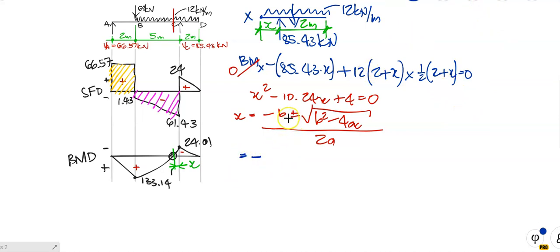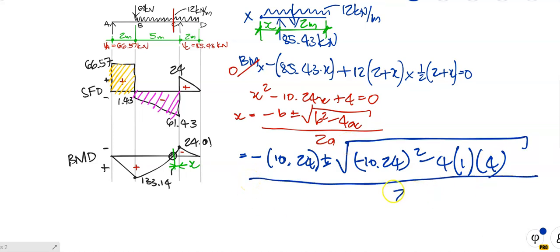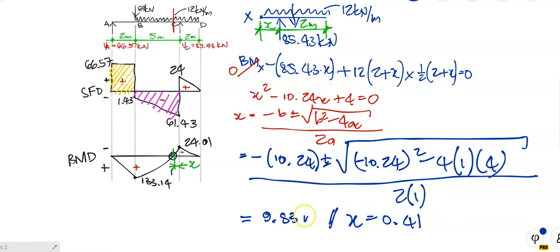X equals minus B — and B is minus 10.24 — plus or minus the square root of (minus 10.24) squared minus 4 times 1 times 4, all over 2 times 1. We get X equal to 9.833 or X equal to 0.41. A quadratic equation always gives two possible solutions — one is right, one is going to be wrong. Can X equal 9.833? No — the beam is only nine meters long. So that's the wrong answer, and X equal to 0.41 is the correct answer.